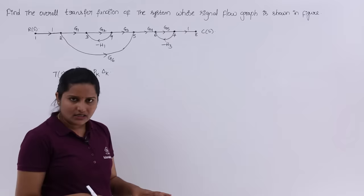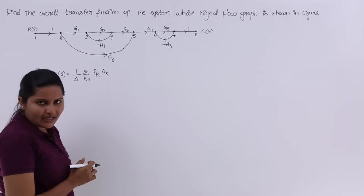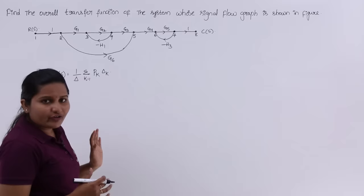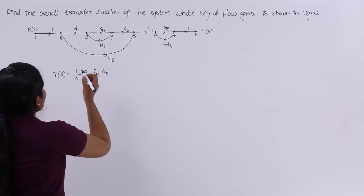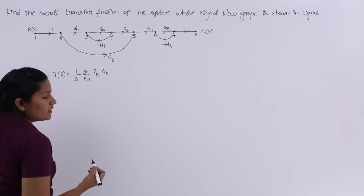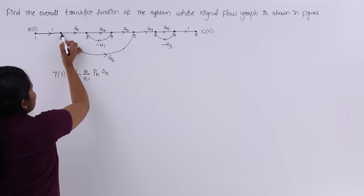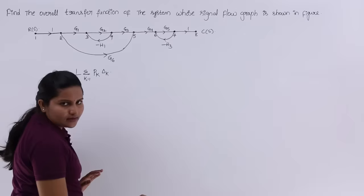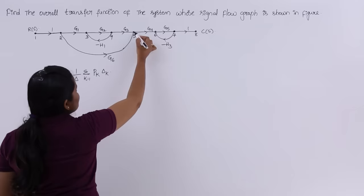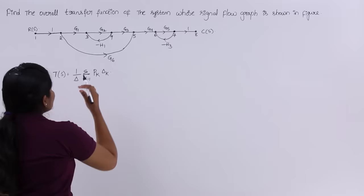First I want to discuss Pk, that means the forward paths. In our signal flow graph we have two forward paths. A forward path is the path between input to output. One path goes from node 1 to 2, 2 to 3, 3 to 4, 4 to 5, 6, 7, 8. The second path goes 1 to 2, then 2 to 5 directly, then 6, 7, 8. I am going to draw those two paths.